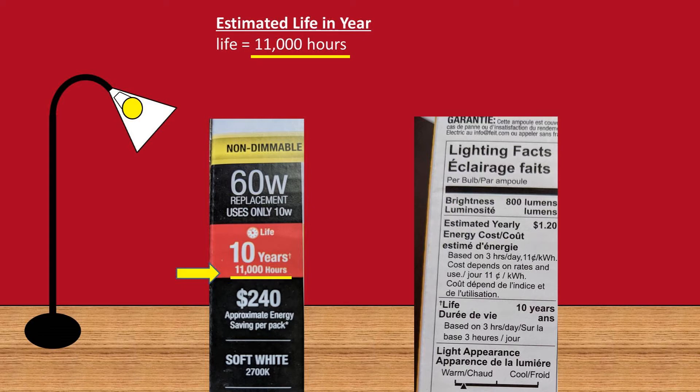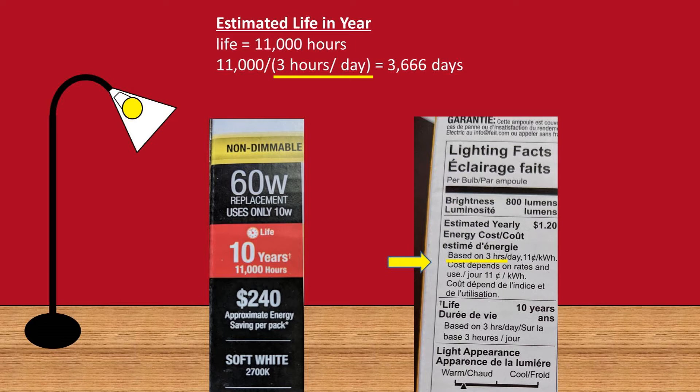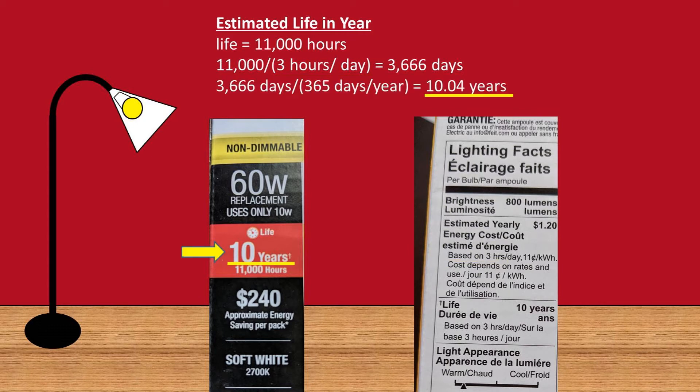Now let's calculate how many years this light bulb will last, given a life of 11,000 hours. So 11,000 hours divided by our projected usage of 3 hours per day equals 3,666 days. 3,666 days divided by 365 days per year equals 10.04 years for the projected life of this bulb given a 3 hour per day usage.